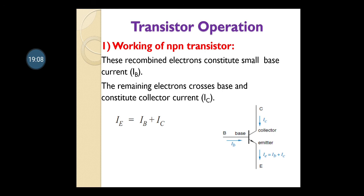There are 3 currents in the transistor circuit: base current, collector current, and emitter current. The current equation: for example, if 100 electrons move through the emitter, 10 electrons move to the base terminal giving base current, and the remaining 90 move towards the collector giving collector current. Therefore, emitter current equals base current plus collector current: IE = IB + IC. This is the overall current equation and the working of the NPN transistor.